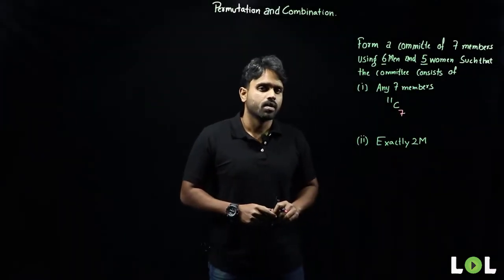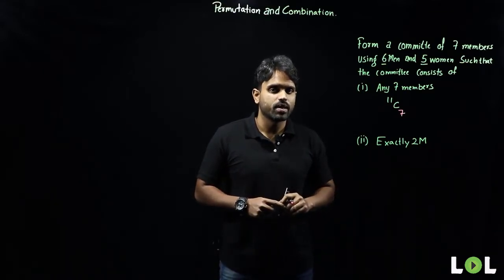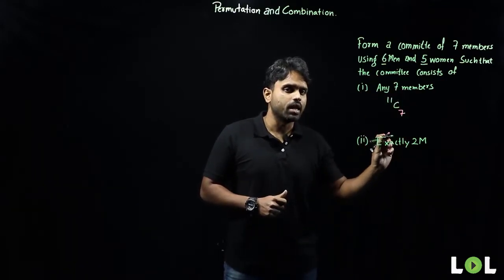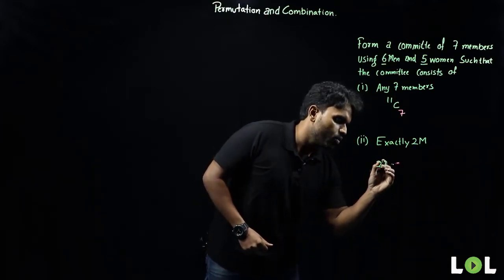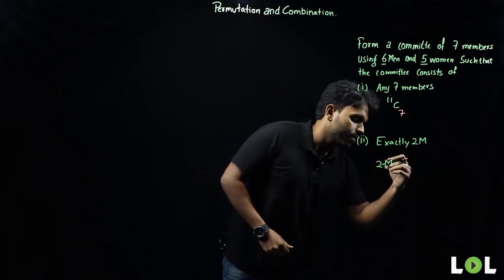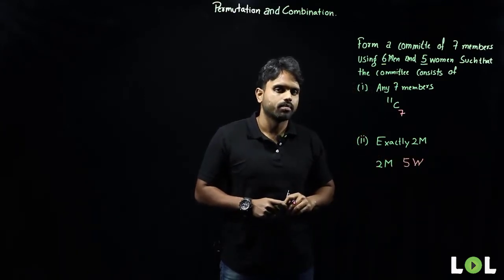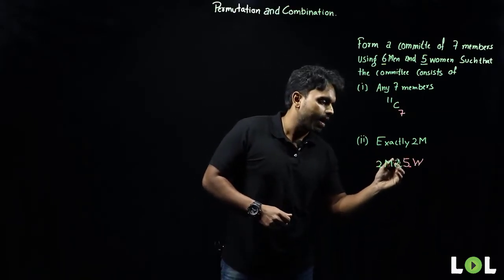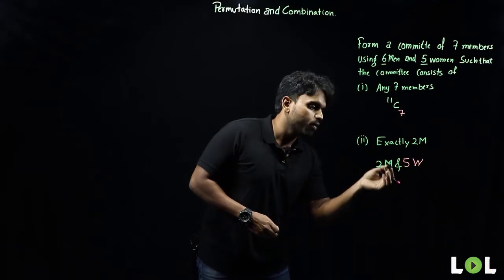Next condition: exactly two men. In permutations and combinations, we start from the condition given. The condition is that the number of men in the committee of seven must be exactly two — neither more than two nor less than two. If there are exactly two men, we need five women to form the committee of seven. The conjunction between them is 'and', which represents multiplication.